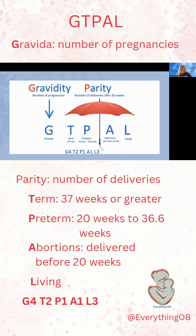You may also see it written another way. When written this way, the G stands for gravida, and the P stands for parity — not for preterm. This P is the umbrella. So this is the same as the previous notation: fourth pregnancy, two term, one preterm, one abortion, and three living. When you see it written this way, think T-P-A-L in your head. She's a gravida 4, para 2-1-1-3.